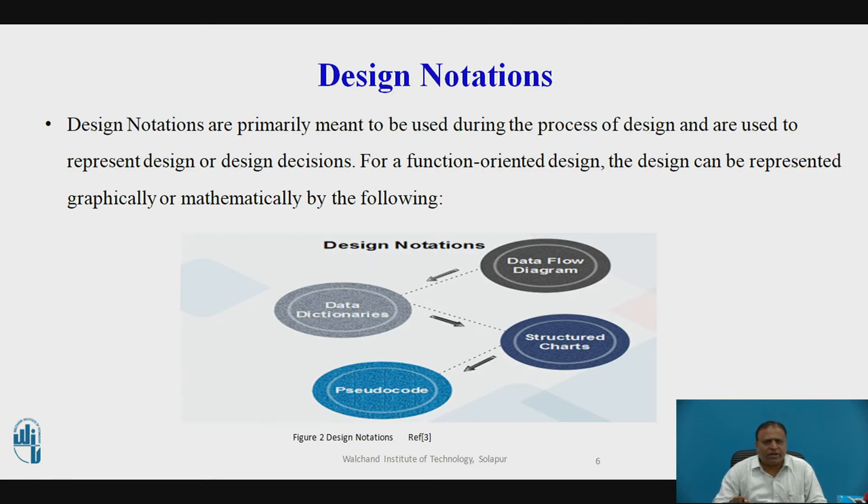Design notations. Design notations are primary means to be used during the process of design and are used to represent design or design decisions. For a function oriented design, the design can be represented graphically or mathematically. In this diagram, we have to show the data flow diagram, structure charts, data dictionaries and pseudocode. These are the different parts of design notation. DFD can point towards data dictionary, data dictionary points towards structure chart, structure chart points towards the pseudocode. This is the design notations of functional design.